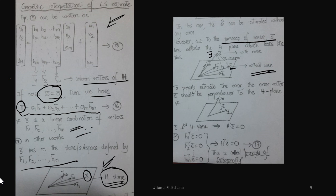In the presence of noise, Y-bar lies outside the H-plane. As shown in the diagram, Y-bar with noise is clearly deviated from Y-bar without noise. This means there is an error, which we can write explicitly. Drawing a perpendicular from Y-bar with noise down to the H-plane, the error corresponds to the hypotenuse of the triangle, making it longer and thus the error is larger in this case.